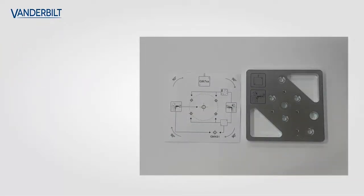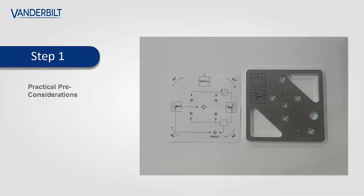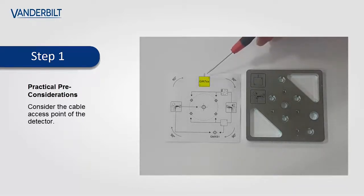When installing the seismic detector onto an uneven steel surface, the GMX-P0 mounting plate must be used. For this, we use the drill template, and the symbol here shows the detector and the cable access point.